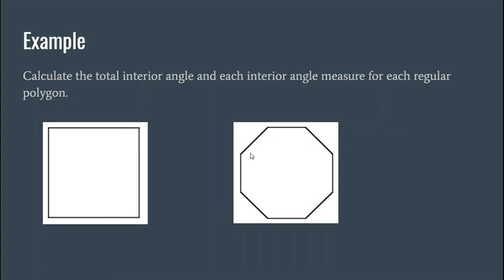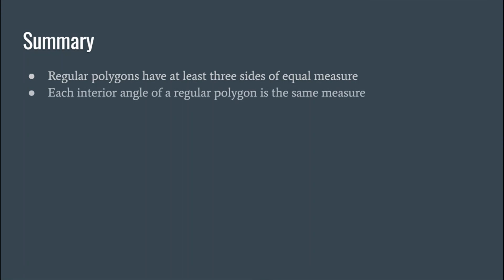To sum everything up: regular polygons have at least three sides, and each side is the same measurement. Each interior angle is also the same measure, and you also want to use the proper notations, so each thing is going to have one tick mark because they're all the same measure.